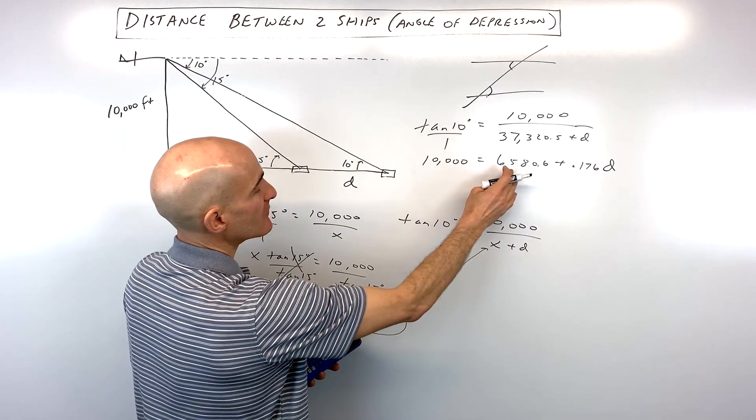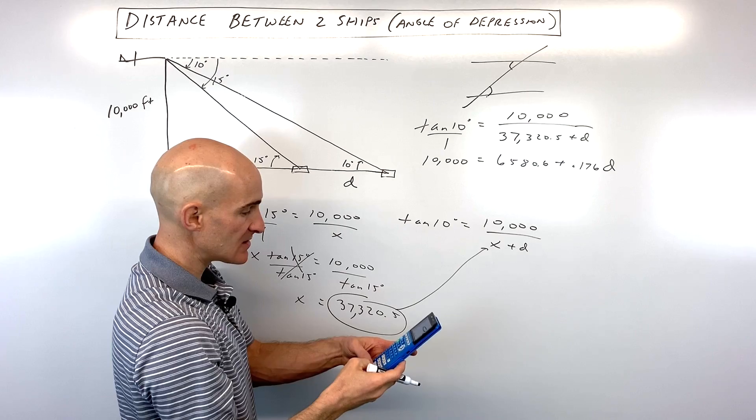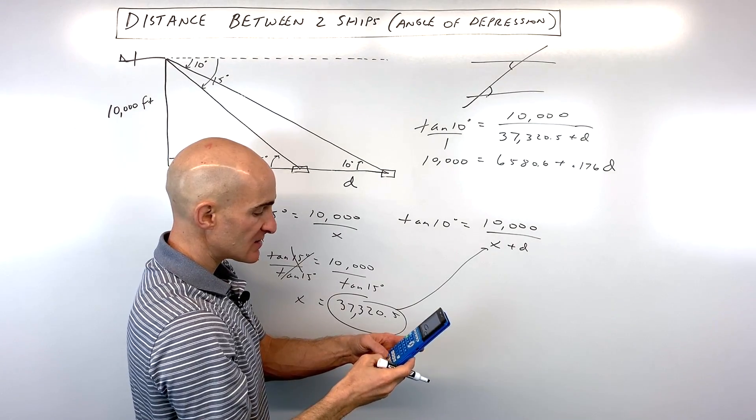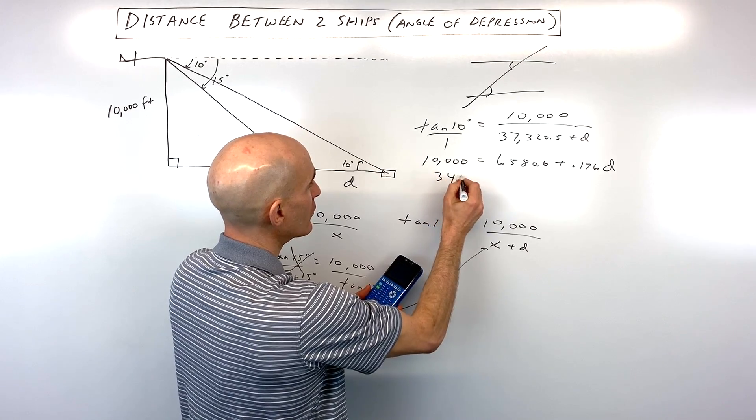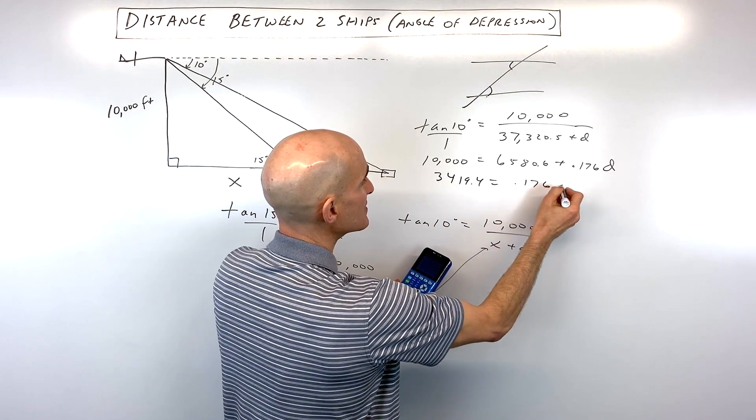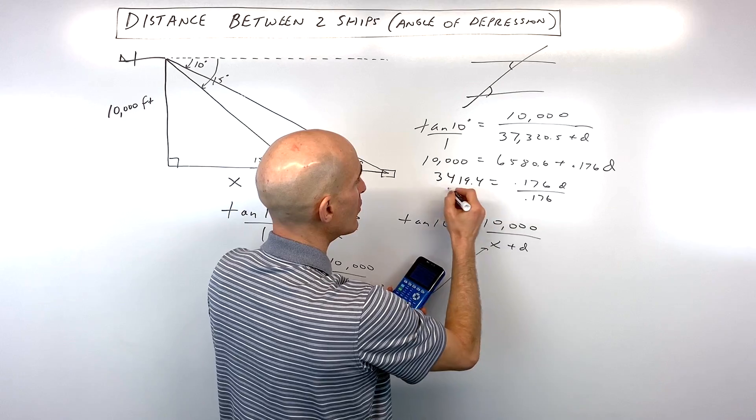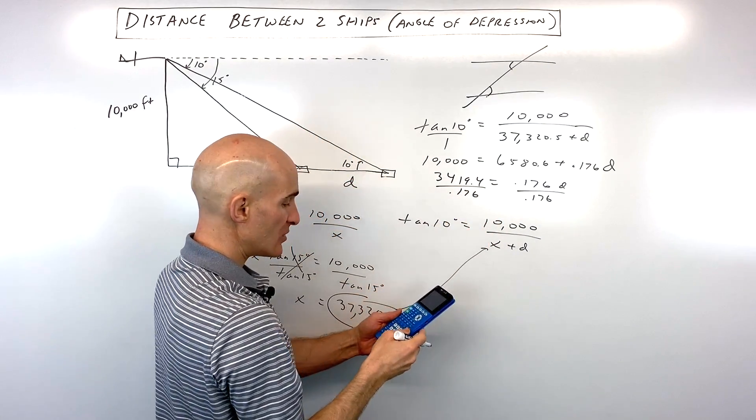So now we're almost there. We just have to subtract 6580.6 from both sides, minus 6580.6, so it looks like we're at 3419.4 equals 0.176d and divide both sides by 0.176 and you got it.